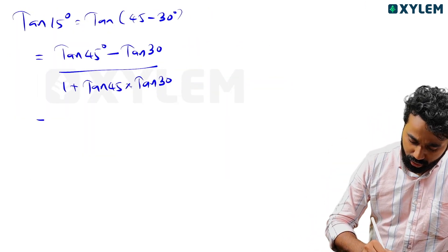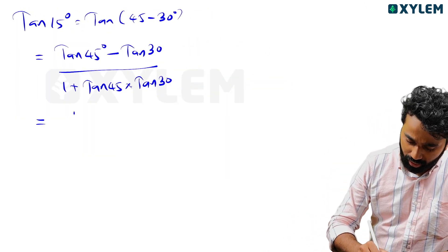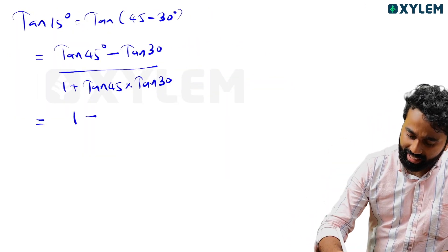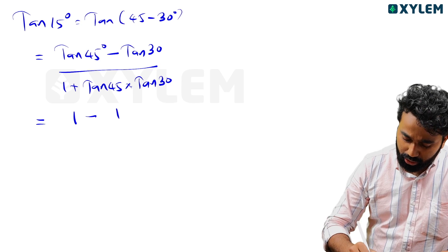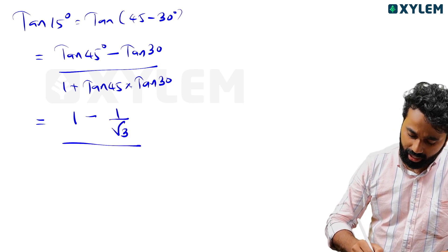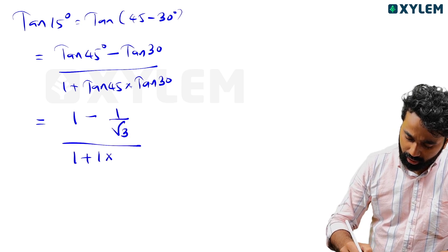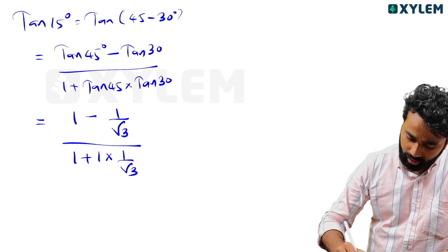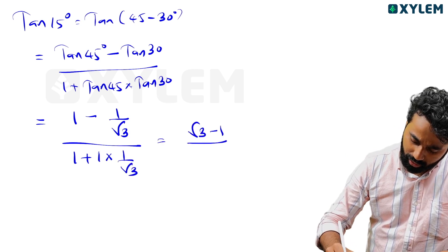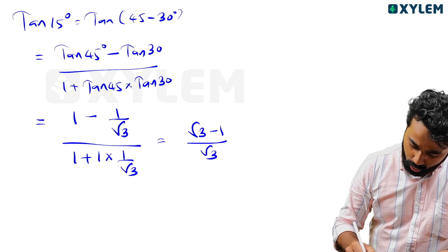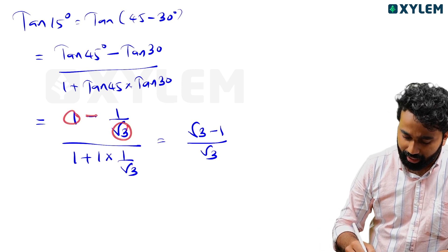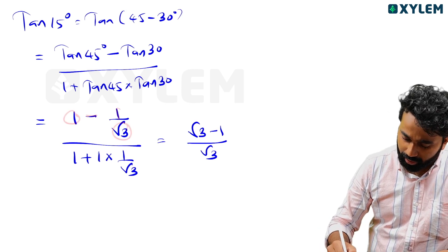The answer: tan 45 is 1, tan 30 is 1 by root 3. You can get 1 minus 1 by root 3, divided by 1 plus 1 into 1 by root 3. That is cross multiplication: root 3 minus 1 by root 3, over root 3. Root 3 minus 1 divided by root 3.